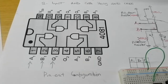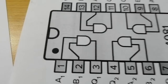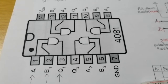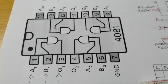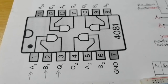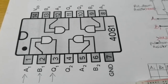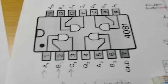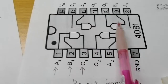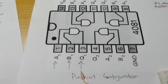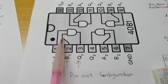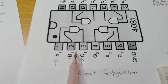In this example I'm using a 4081. You can see it here — this is the pin configuration. It's a quad two-input AND gate, and as you can see I have four of them: one, two, three, four.